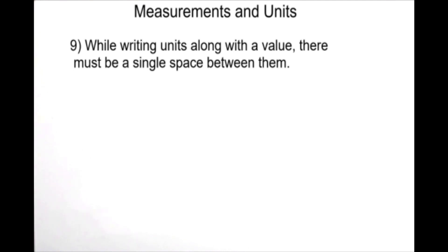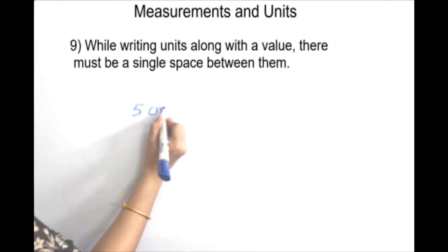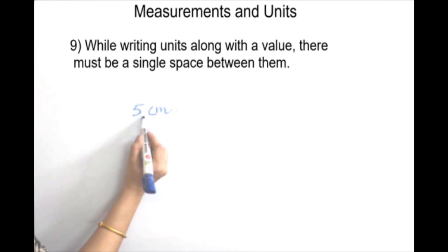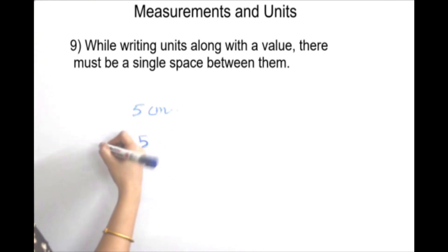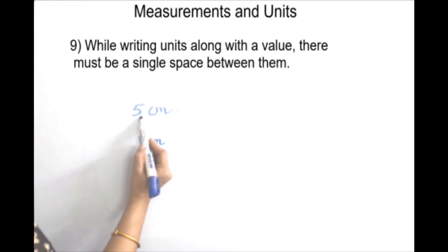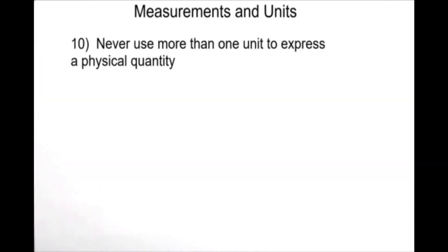Now let's look at the 9th rule. We leave a small space between the numerical value and the unit symbol. For example, 5 cm — there is a small space between 5 and cm. It is not written as 5cm without a space.